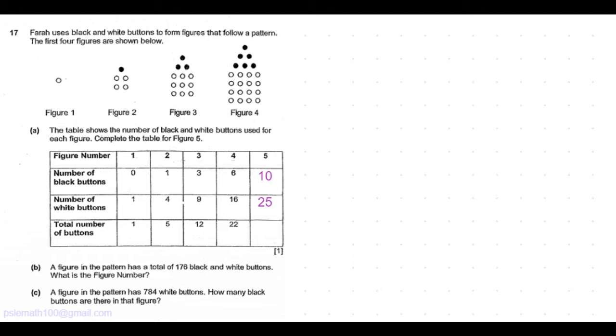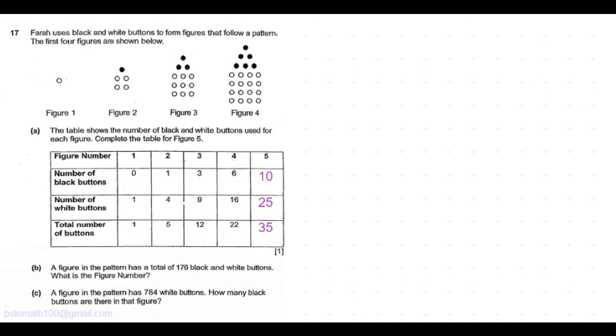Now coming to the total number of buttons, we just have to add the black buttons and the white buttons. So for figure 5, 10 plus 25 is 35. Part B of the question.